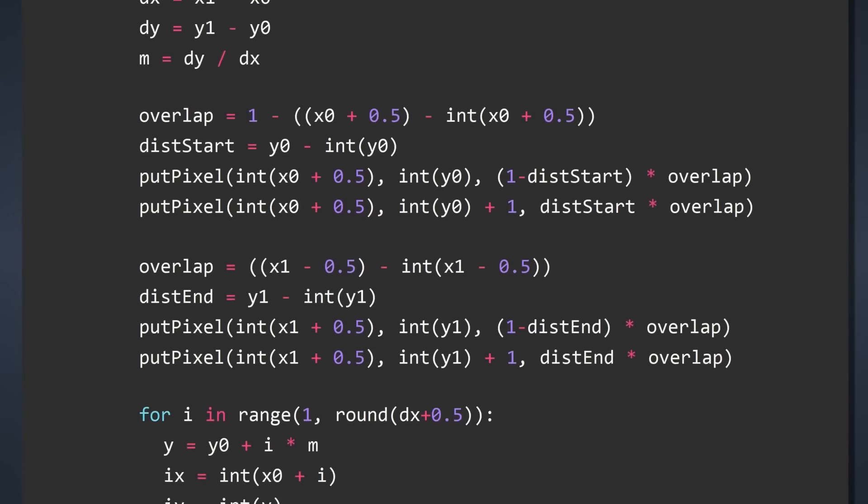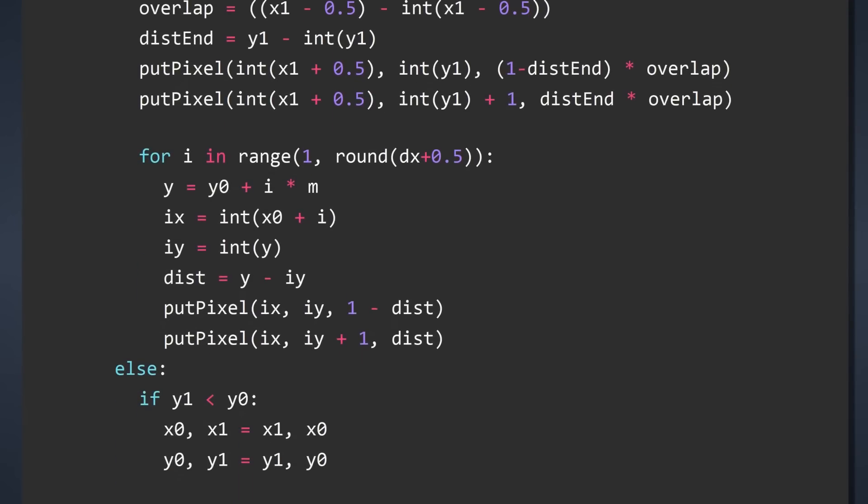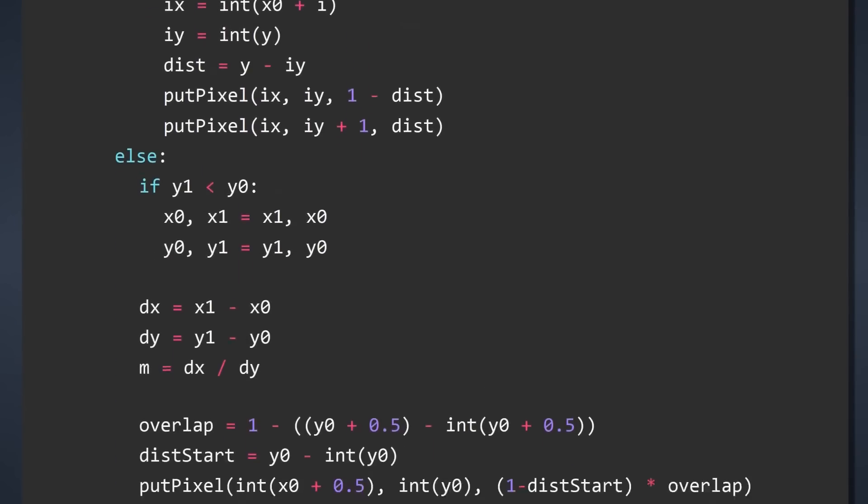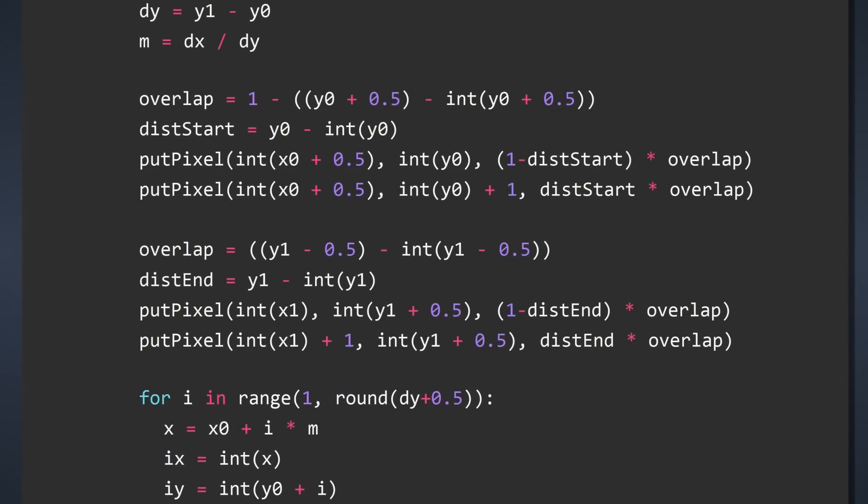And of course, our loop now only loops through the remaining pixels, excluding the start and end. Of course, we have to do all of this in the else case as well, where we draw vertical lines. There we go. Now our algorithm is done.